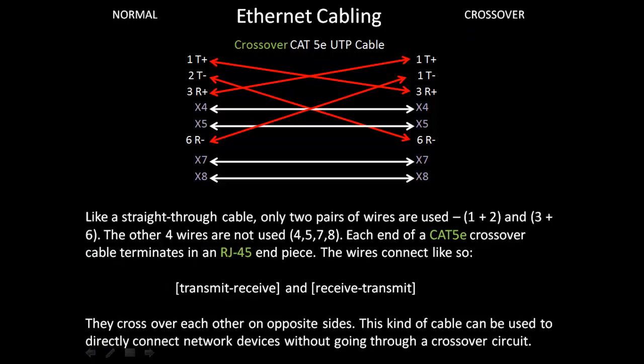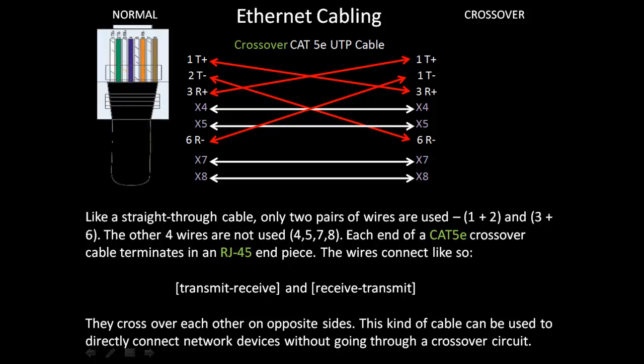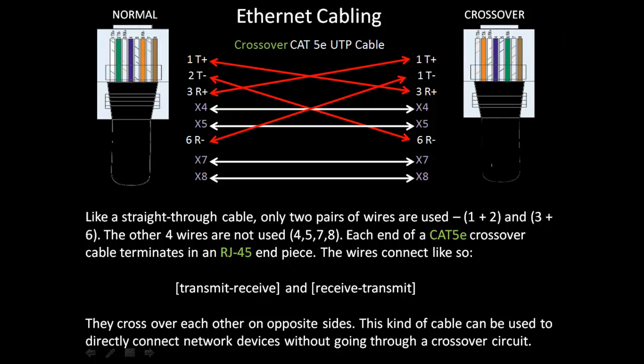The next type of Ethernet cable is a crossover cable — again Category 5e unshielded twisted pair. The ends are inverted: one normal end, and on the other end, you cross over transmit to receive and receive to transmit. Like a straight-through cable, only two pairs of wires are used: 1 and 2, and 3 and 6. Each end terminates in an RJ45. The wires connect transmit to receive and receive to transmit, crossing over each other on opposite sides. This cable can be used to directly connect network devices without going through a crossover circuit, because essentially it is a crossover circuit.